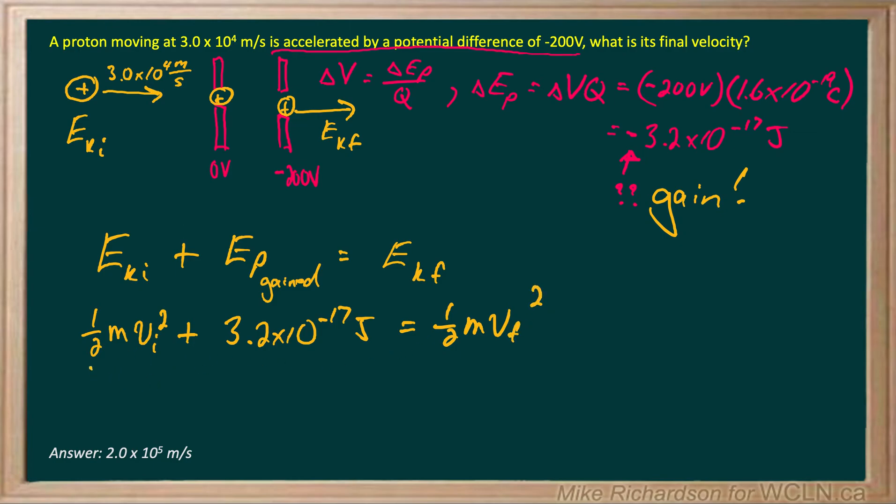Now if I put my values in, mass of the proton is 1.67 times 10 to the negative 27 kilograms. My initial velocity is 3 times 10 to the 4. I've got to make sure I square that. Plus 3.2 times 10 to the negative 17 equals 1/2 mass of the proton times V final squared.